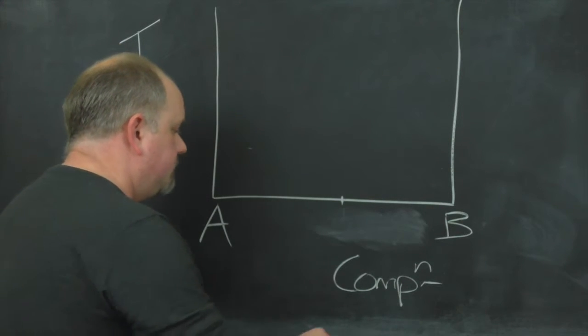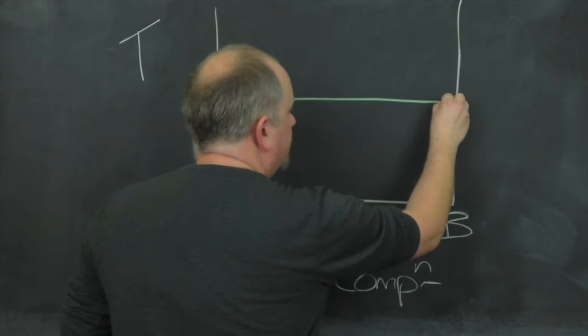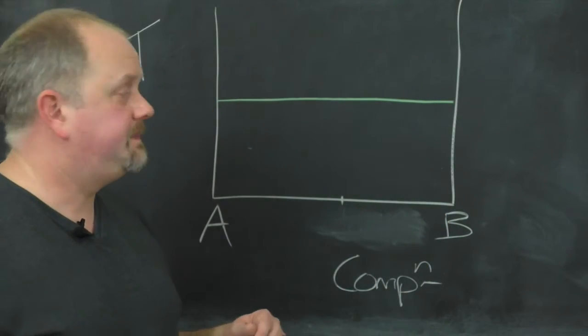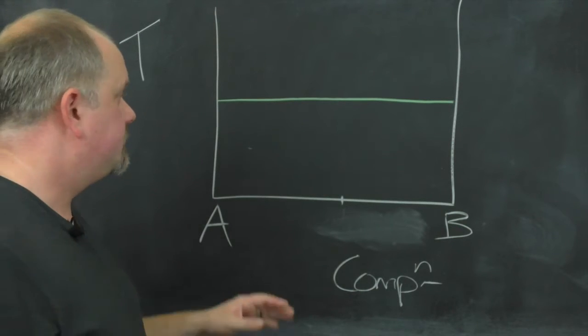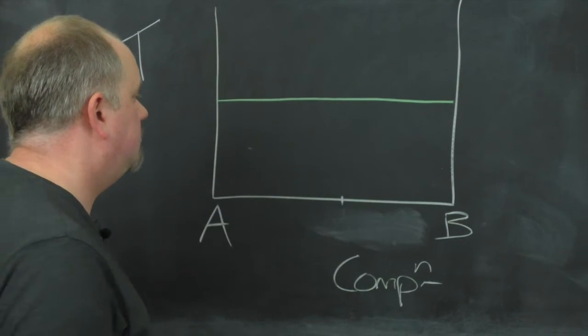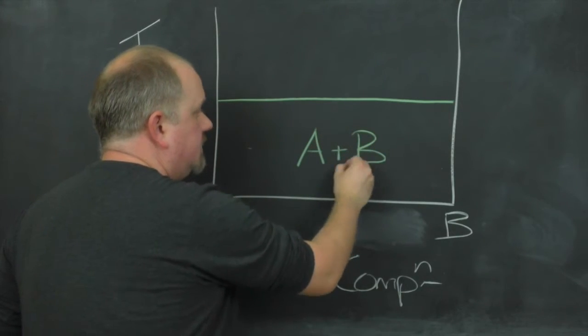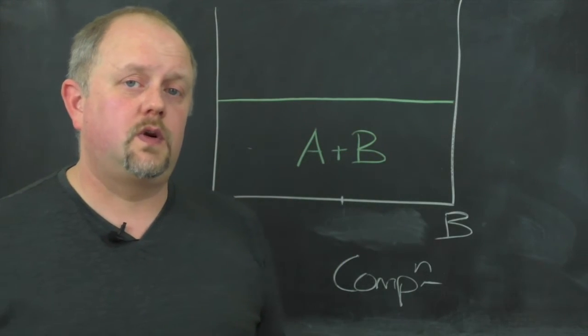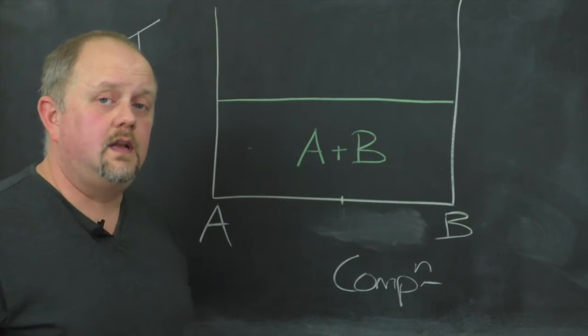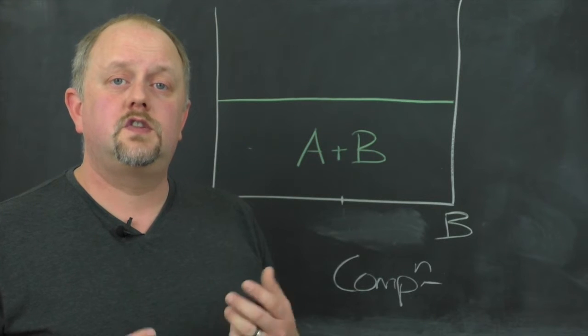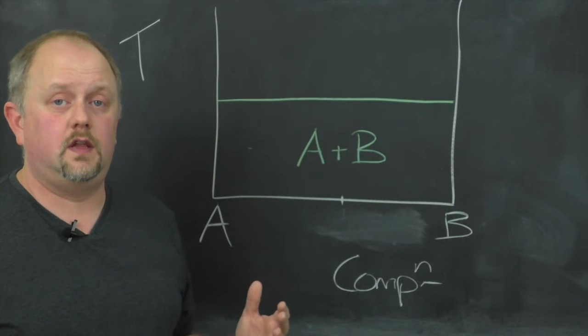In this system we can start by drawing a straight line, an isotherm - a line of constant temperature across the phase diagram from one axis to the other. Below this line we just have a mixture of two different solids, A plus B in the simplest case. This line in green we refer to as the solidus, and this is the highest temperature at which the system can be completely solid.